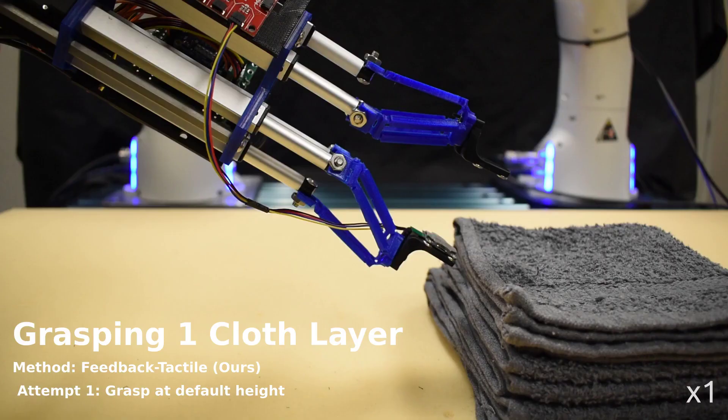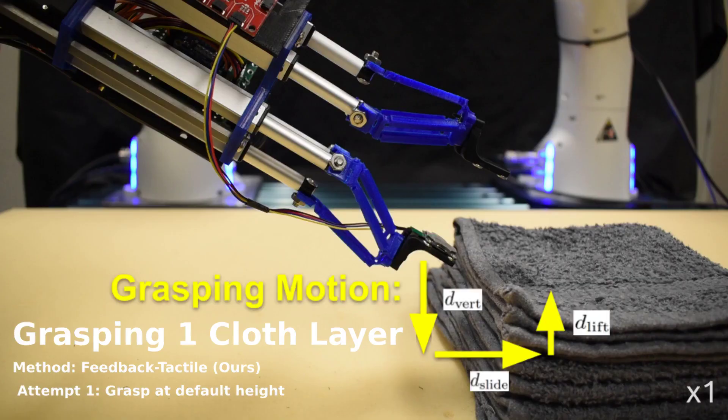We evaluate our classifier on grasping one layer of cloth. The policy only varies the grasp height for the grasp motion.